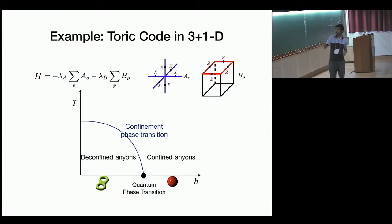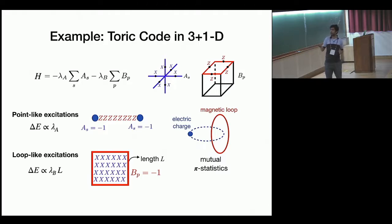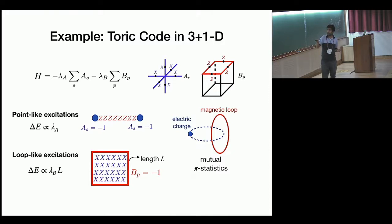Let's take the case of 3D Toric code. This is the Toric code Hamiltonian—there is a star term and a plaquette term. Toric code has two kinds of excitations in 3+1D: point-like excitations, which cost order-one energy proportional to lambda_A (violating the star term), and loop-like excitations, which are open membranes costing energy of order L.